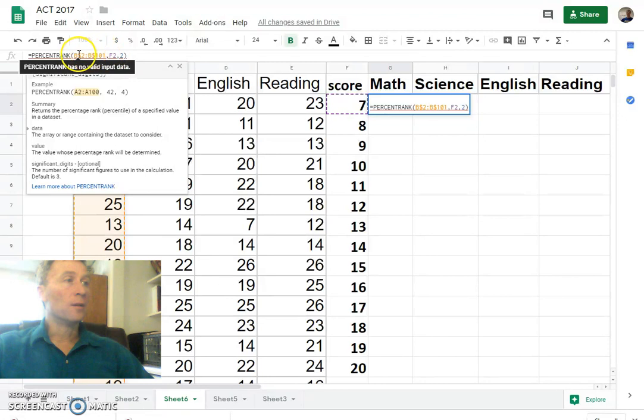We'll let the columns move because we'll scoot over. But we want this column to stay the same, the score column. So we'll put a dollar sign in front of that.